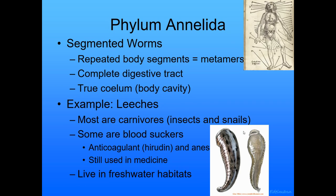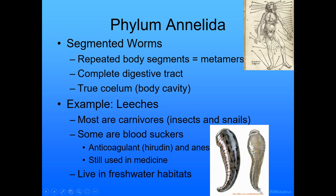The annelids are the segmented worms. They have repeated body segments called metamers, a complete digestive tract, and a true coelom — a true body cavity with a separate entrance and exit. The example for annelids is leeches. Most leeches are carnivores that eat insects and snails, so not bloodsuckers — but some of them are.